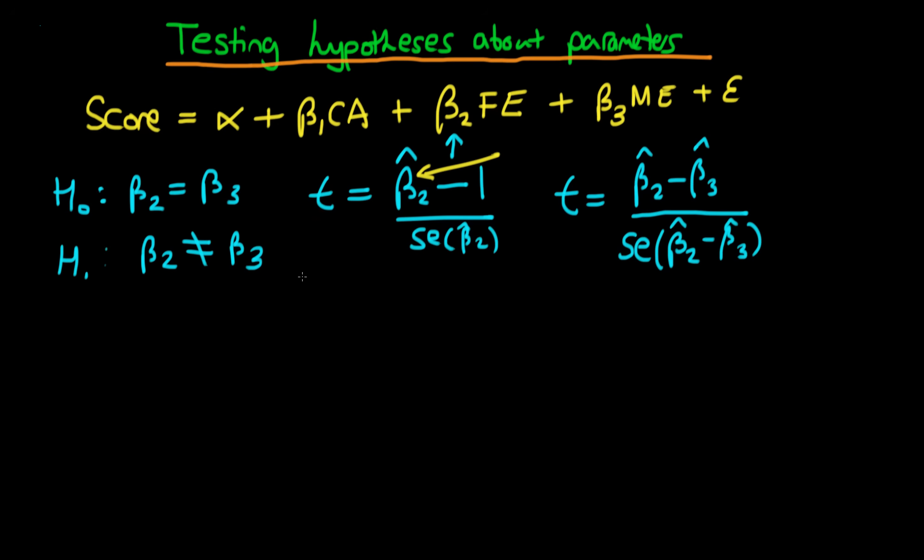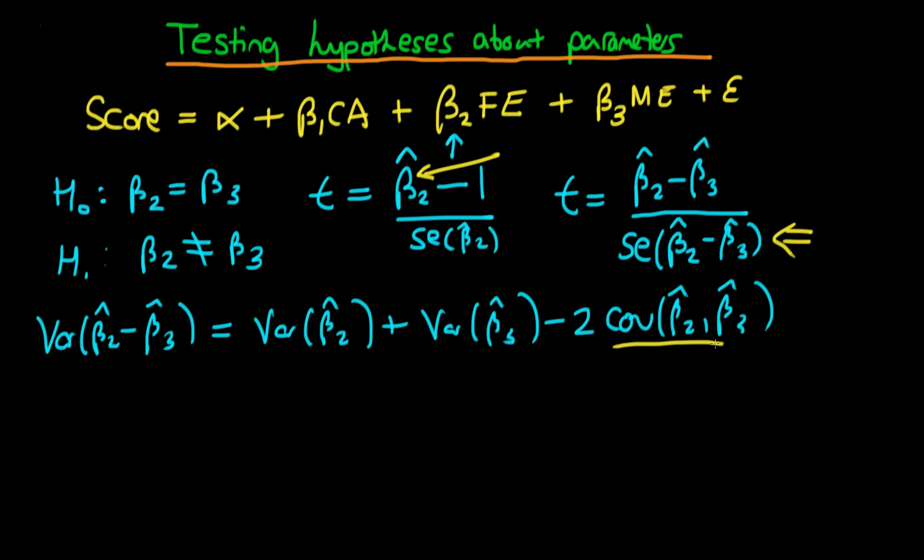The reason is that the variance of (β̂₂ - β̂₃) equals Var(β̂₂) + Var(β̂₃) - 2Cov(β̂₂, β̂₃). So we have to know this covariance term in order to work out the variance, and the standard error works exactly the same way.